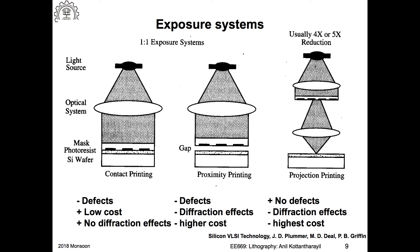In projection printing, the wafer is mounted on something that holds it tight, but nothing from the optical system or mask is in contact with it. So it is possible to have a small mask with features maybe four times that of the feature you really want on the wafer, and then reduce this. The mask is made using electron beam lithography, and we will also see some advanced techniques when you reduce the dimensions of the features.